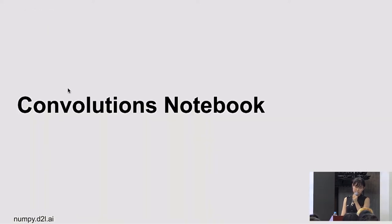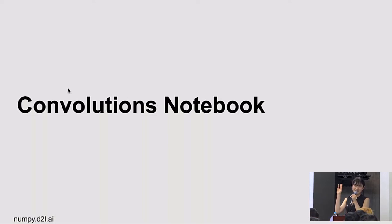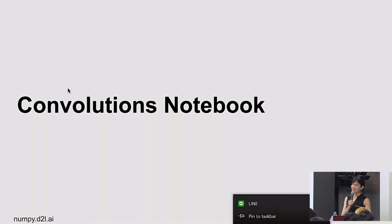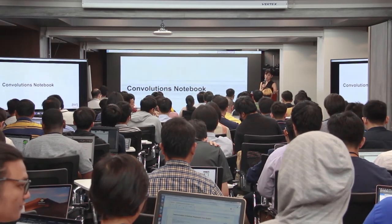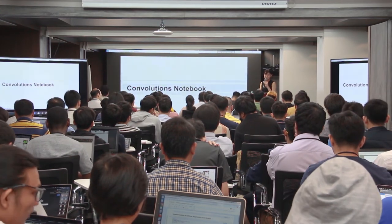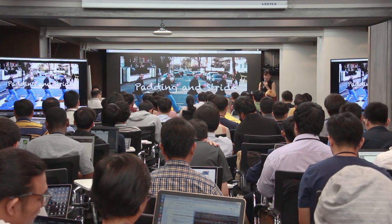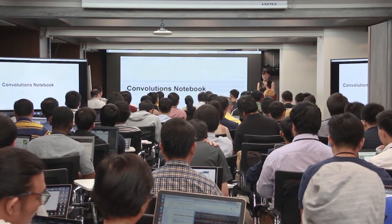We'll run the convolutional neural network notebook later. Before that — does anyone have the installation done already? If no one has it set up, I'll demo this afternoon how to set up on AWS. It will be straightforward but important to get you started running neural networks. The slides are posted as PDF on my GitHub, the same repository as the installation link.